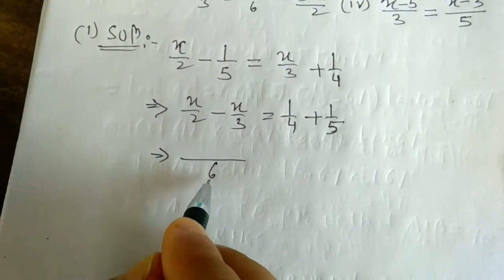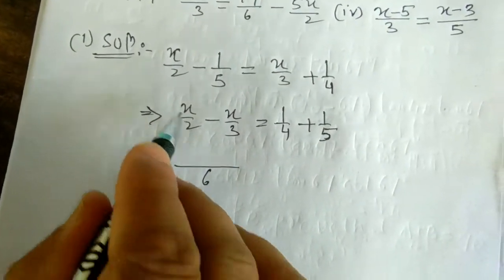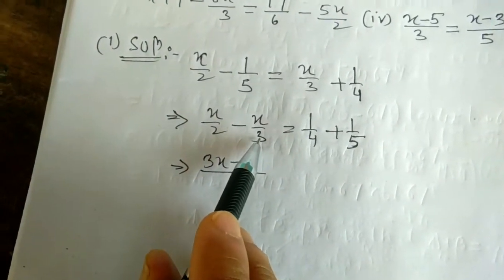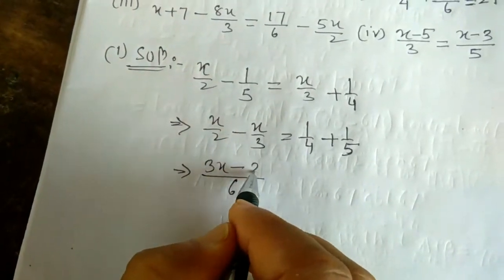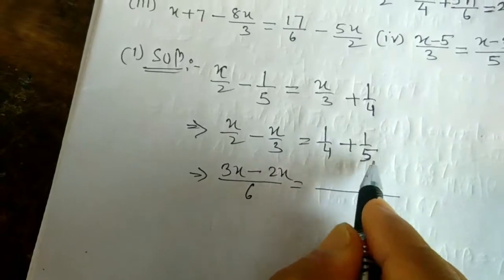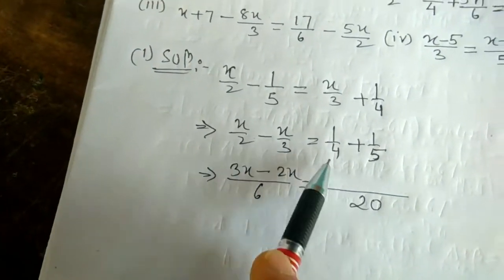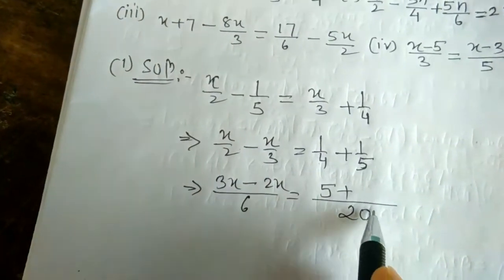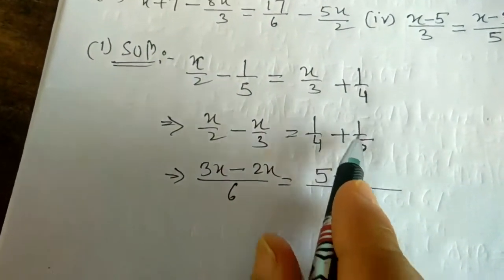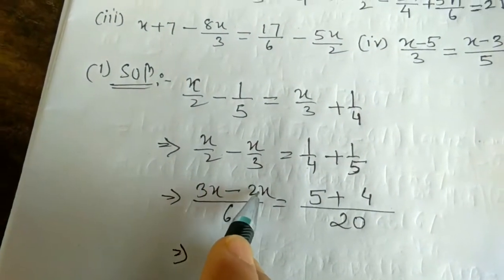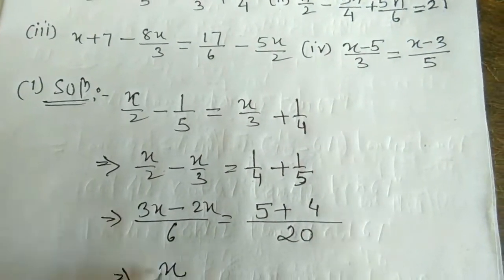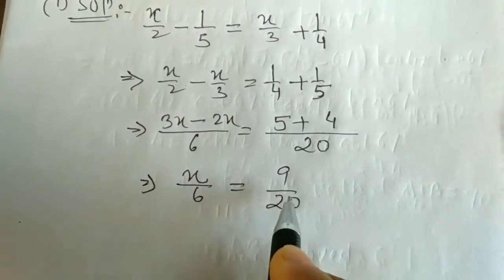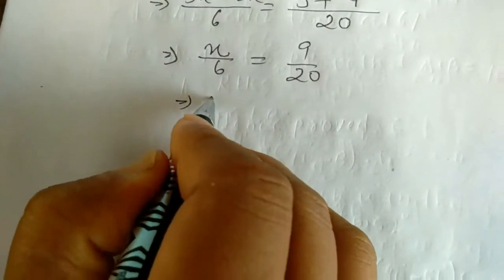LCM of 2 and 3 is 6. Dividing 6 by 2 gives 3, so 3x. Dividing 6 by 3 gives 2, so minus 2x. On the right side, LCM of 4 and 5 is 20. Dividing 20 by 4 gives 5, so 5 times 1 is 5. Dividing 20 by 5 gives 4, so plus 4. So we get (3x - 2x)/6 = (5 + 4)/20, which gives x/6 = 9/20.